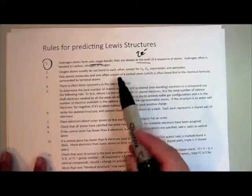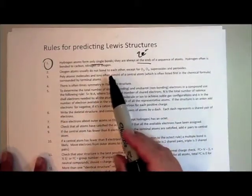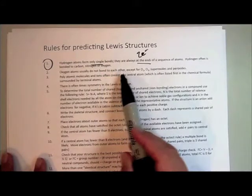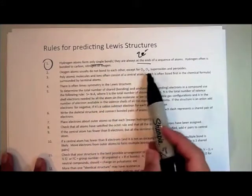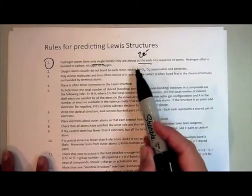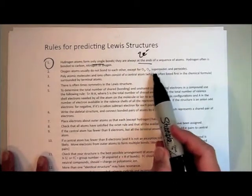Oxygen atoms normally, if given a choice with other elements, won't bond to each other except for the case of oxygen and ozone, which obviously have to bond to each other because they're the only thing there, or special molecules called superoxides and peroxides, which we won't deal with in this class.